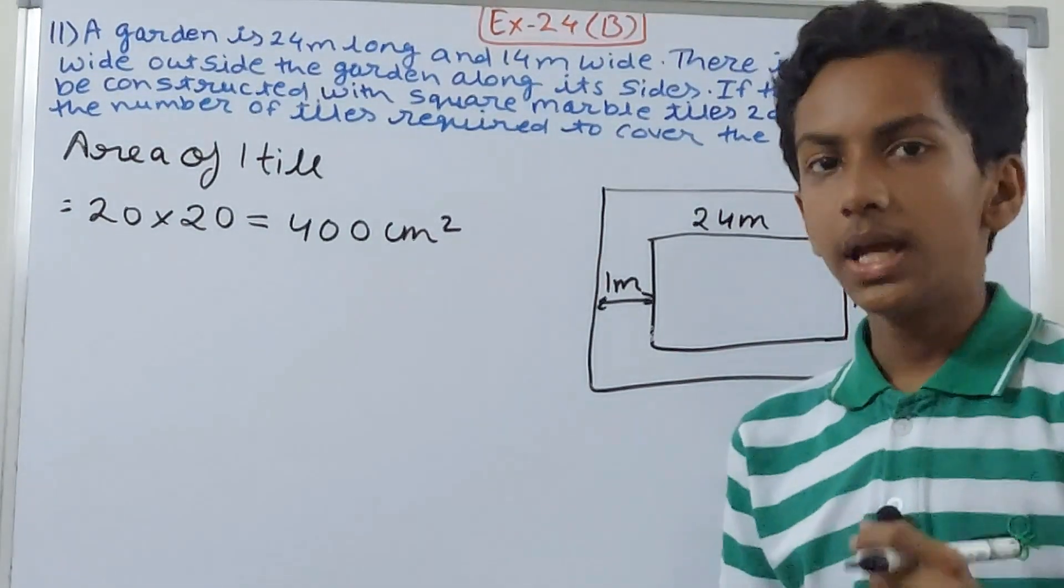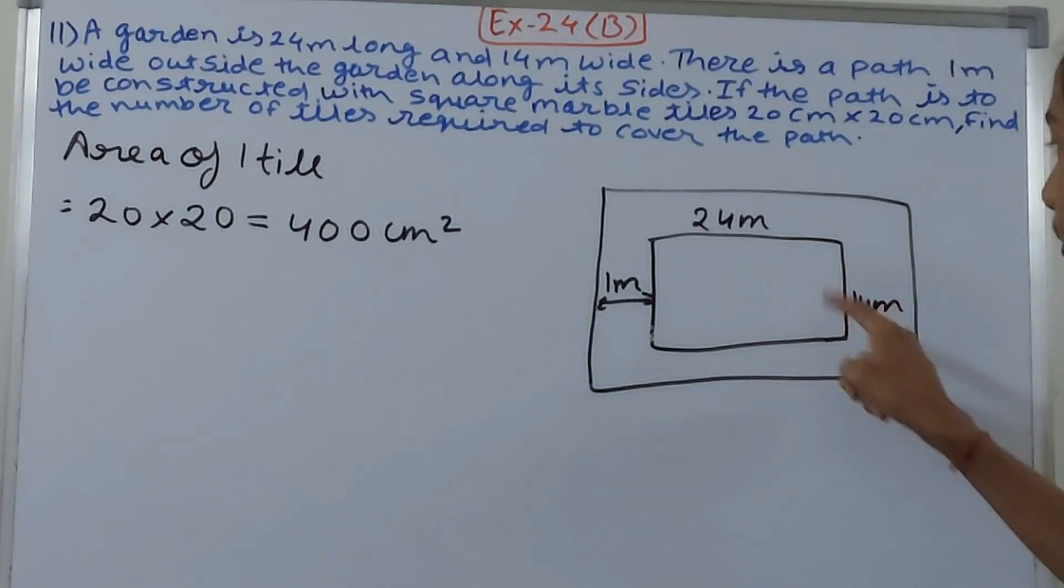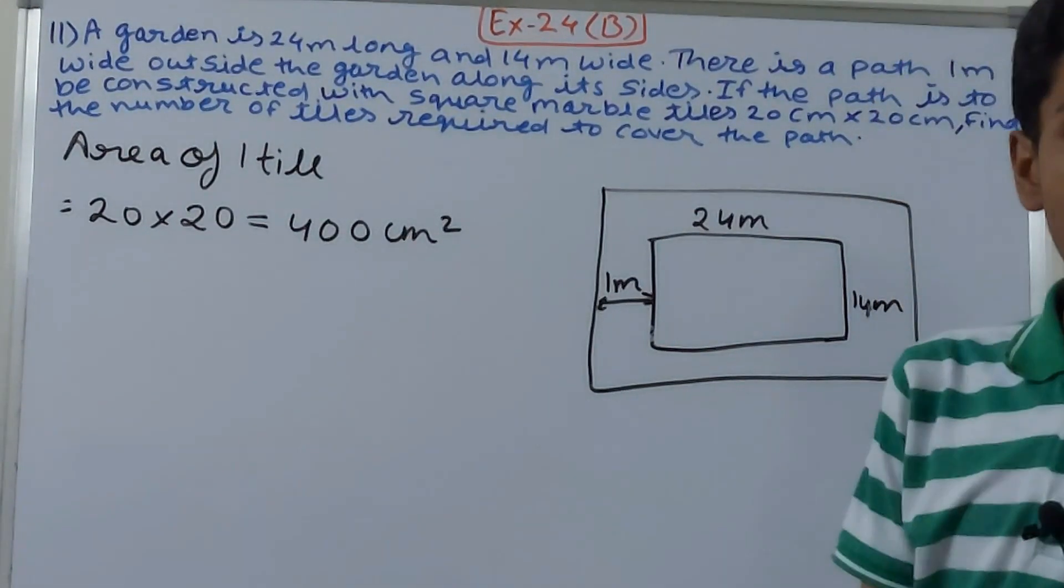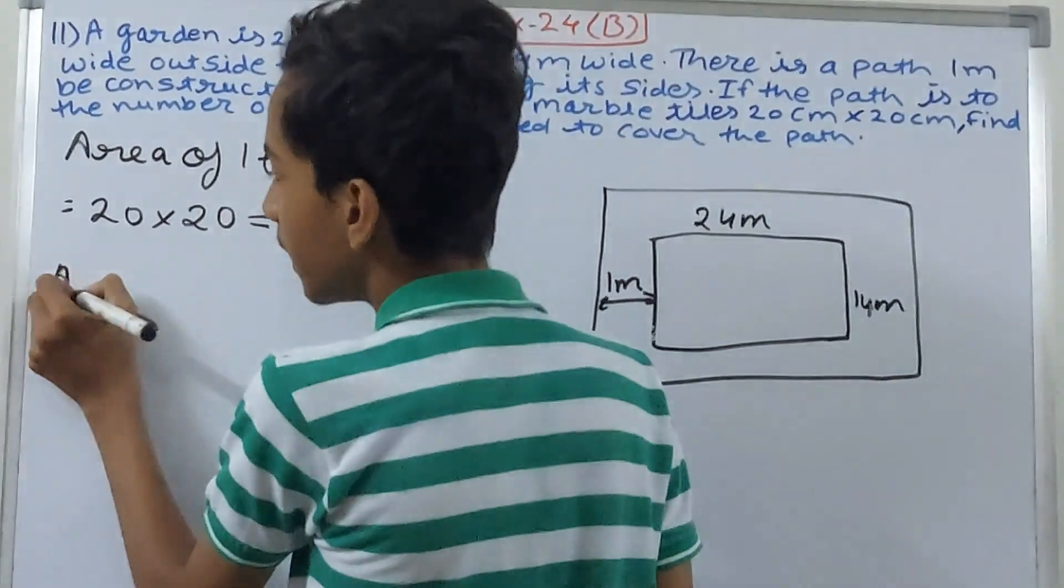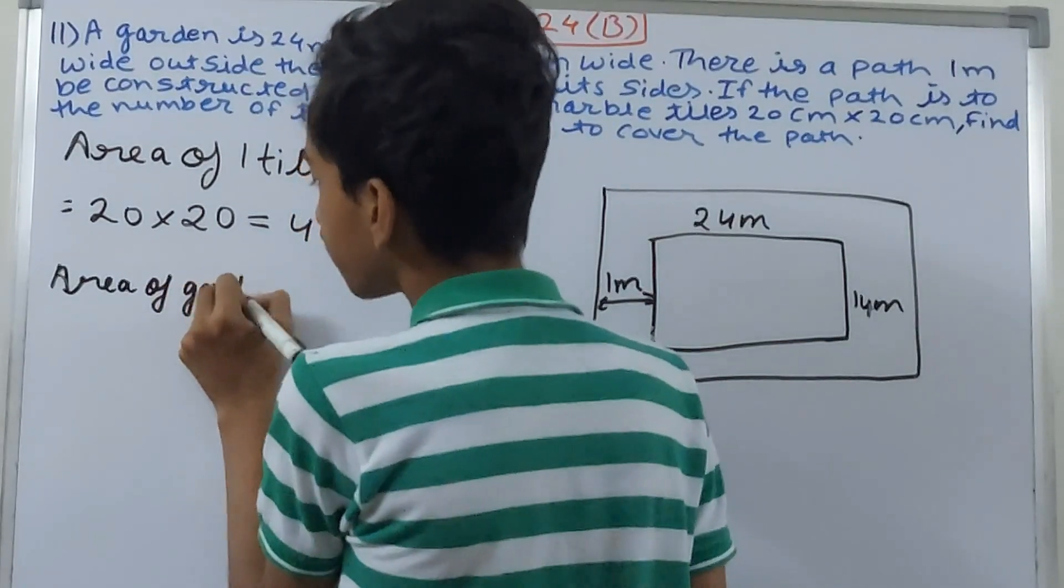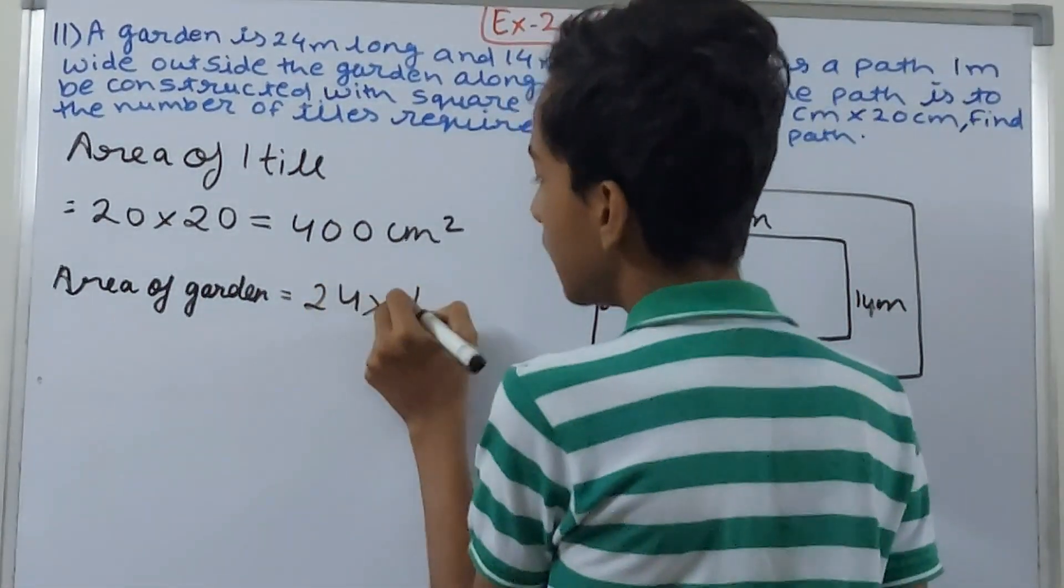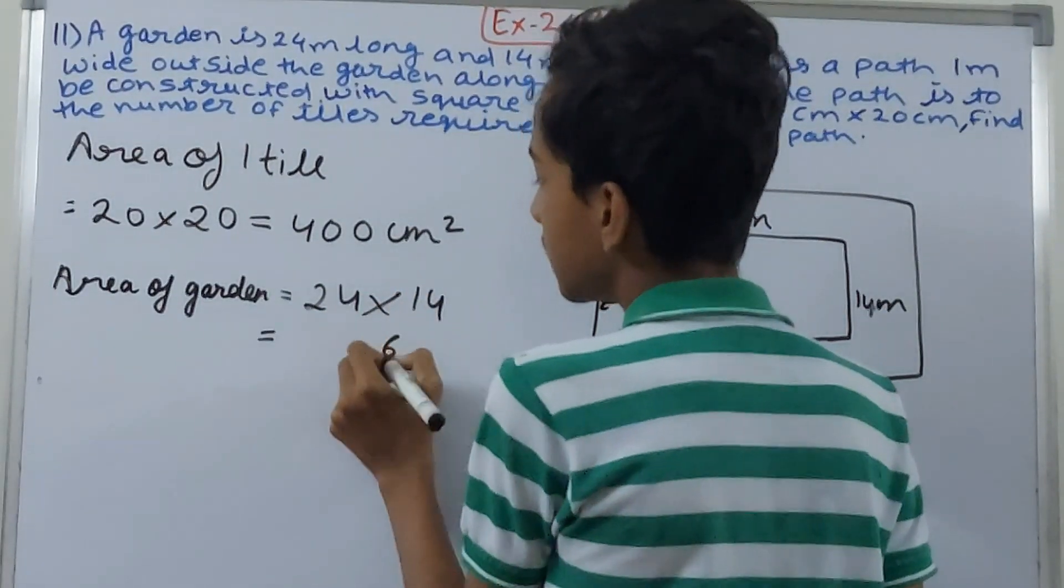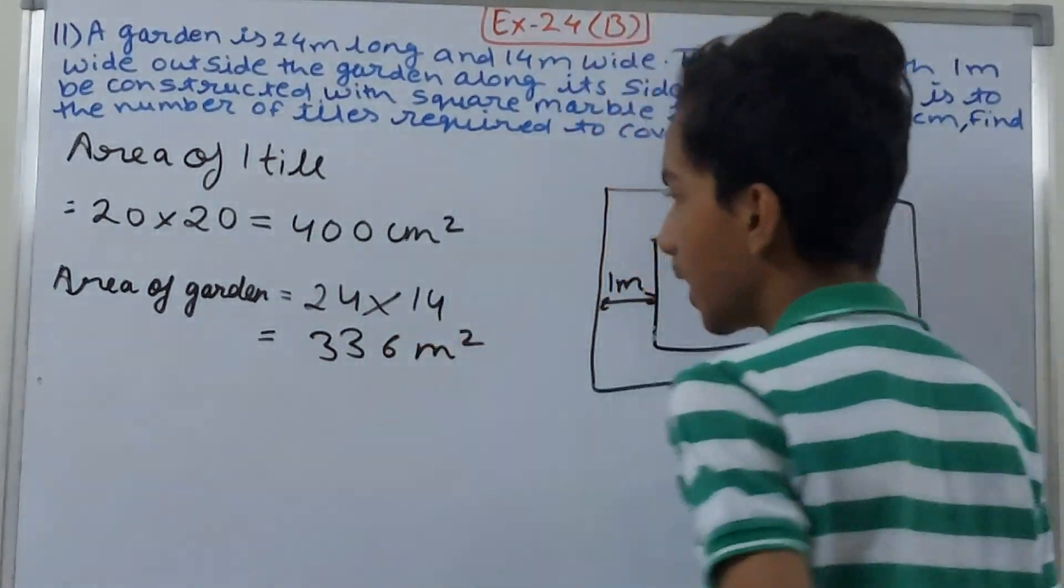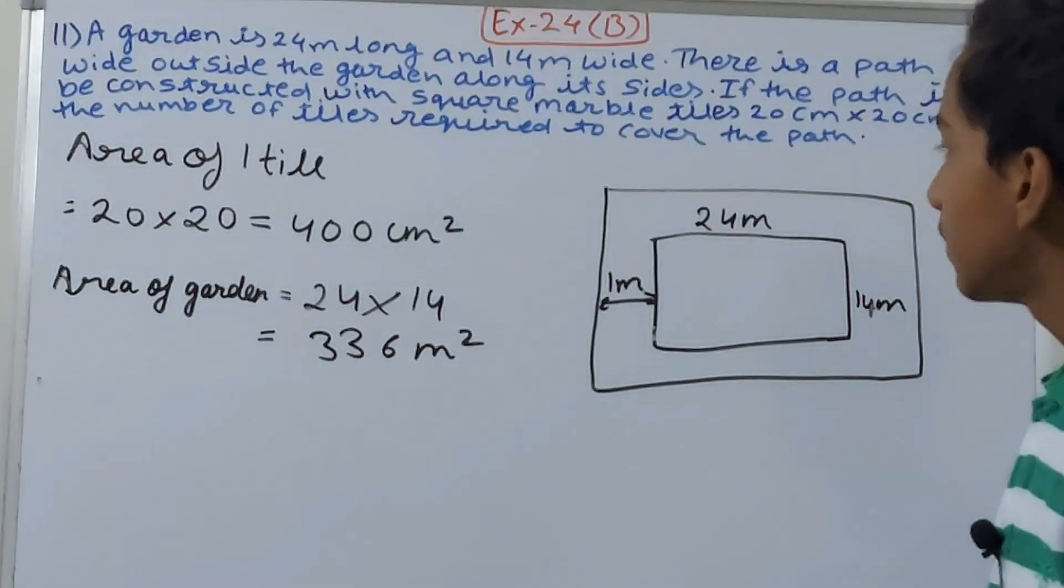Next we have to find area of the path. Finding the area of the path will be very simple. First of all we find area of garden. Area of the garden becomes 24 into 14, that will be 336 square meters. This is the area of the garden.